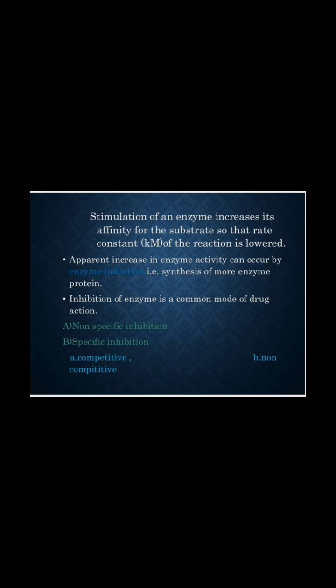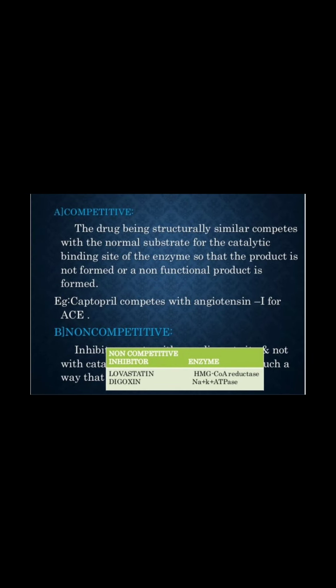Enzyme inhibition can be non-specific or specific inhibition, and specific inhibition is further divided into competitive and non-competitive inhibition. In competitive inhibition, the drug, being structurally similar, competes with the normal substrate for the catalytic binding site of the enzyme, so that the product is not formed or a non-functional product is formed. Example is captopril, which competes with the angiotensin-converting enzyme.